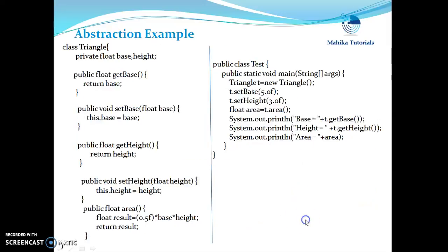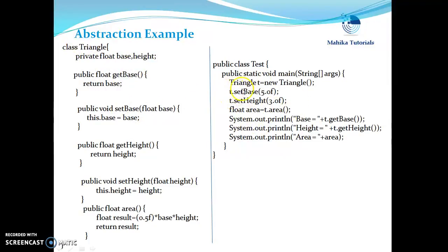Let's take an example. Suppose if we have a class Triangle with two data members, base and height, and getters and setters for them, and there is one area method which computes the area of the triangle. A test class has to use this Triangle class. Since base and height are private, they cannot be accessed directly — we set those values using the setters. Then the test class can simply call the area method without having knowledge of the implementation details, that is, without knowing how the area is being computed.